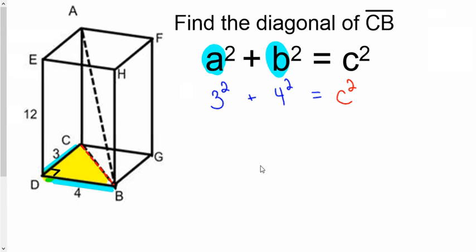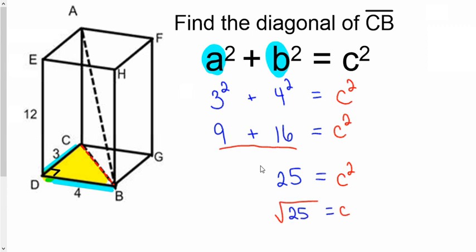So 9 plus 16 equals C squared. 9 and 16 is going to be 25. How do we get the square off of C? By putting the square root on the other side. And that lets us know that CB is 5. And that's what we would do there.